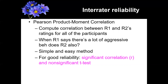Remember that correlation means as one variable goes up, the other goes up or down in a predictable way. We want a positive correlation here — a negative correlation would mean the researchers are going in opposite directions. So if researcher one says there were eight aggressive behaviors, researcher two should say something close to that. If researcher one says three, researcher two should say something close to that, and that would produce a significant correlation between their ratings.